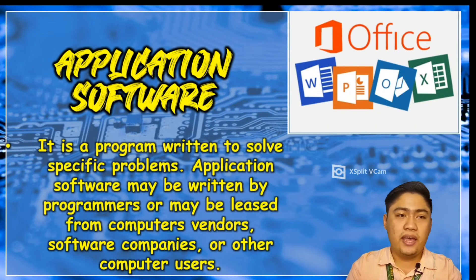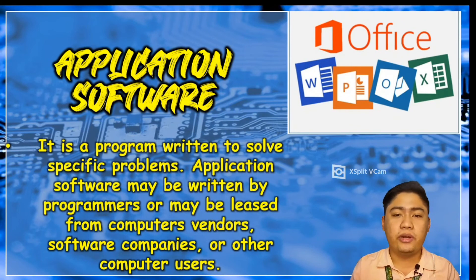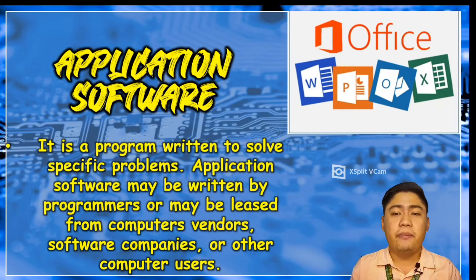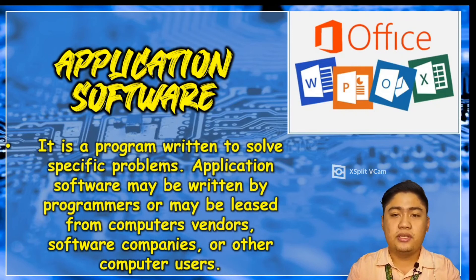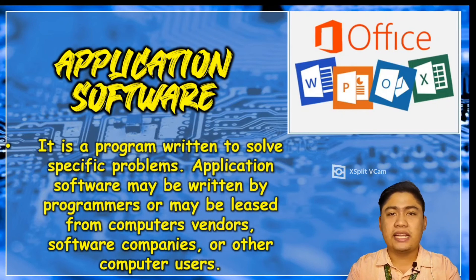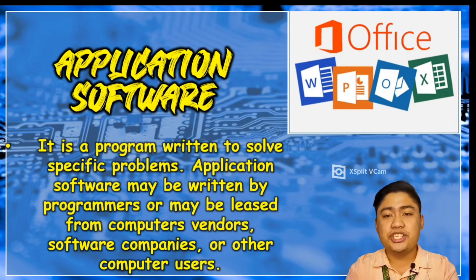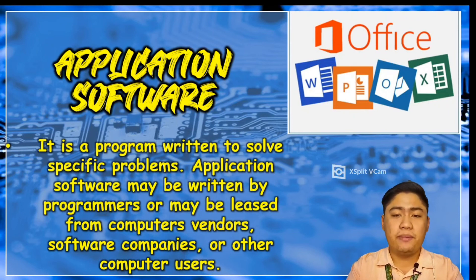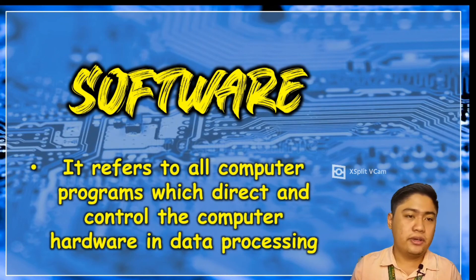Application software is a program written to solve specific problems. Application software may be written by programmers or may be leased from computer vendors, software companies, or other computer users. Several types of software that facilitate computer use are available. Examples of application software include word processors, spreadsheets, database management programs, and presentation software.